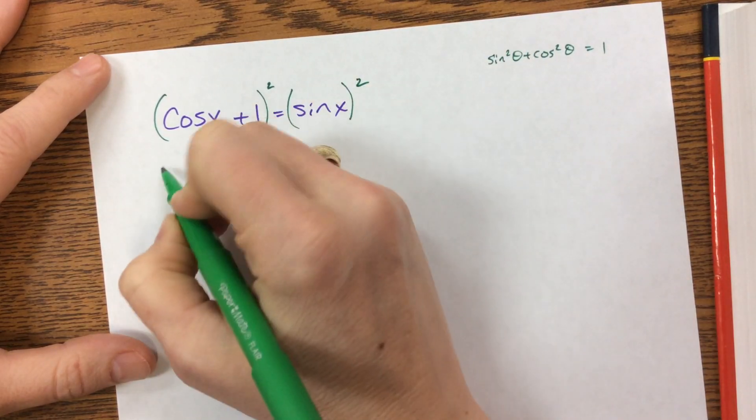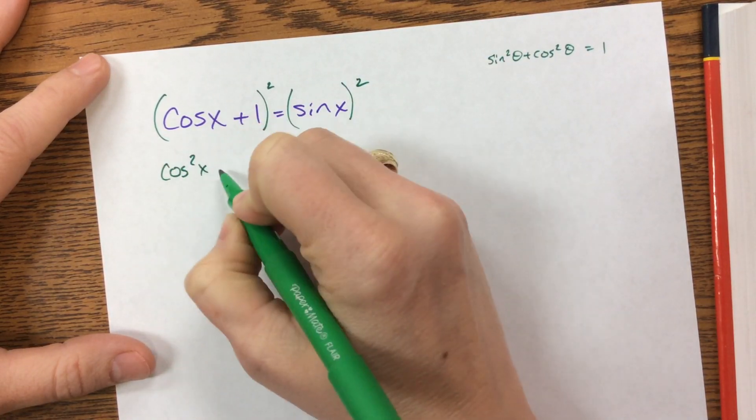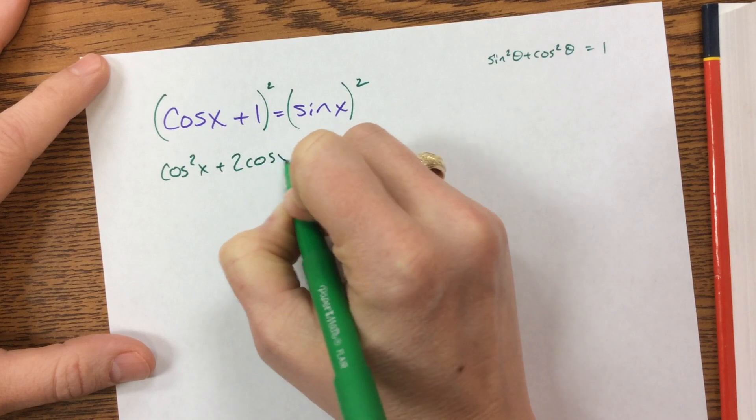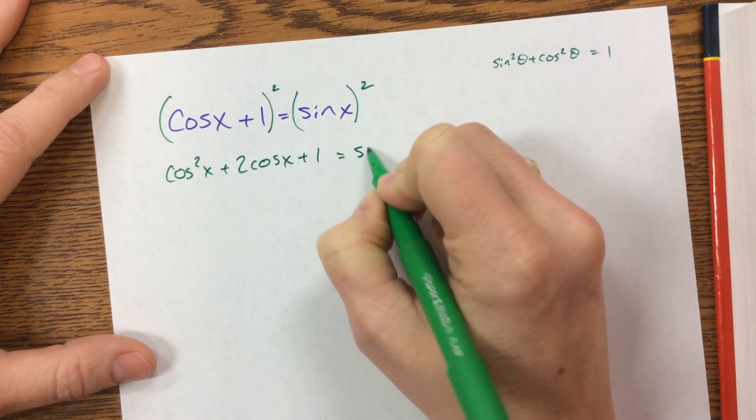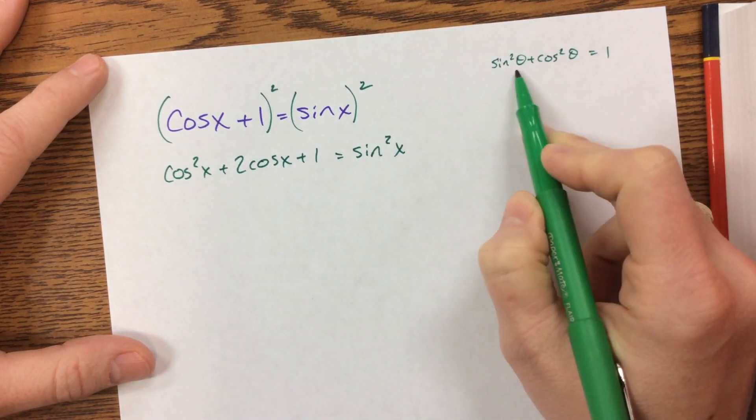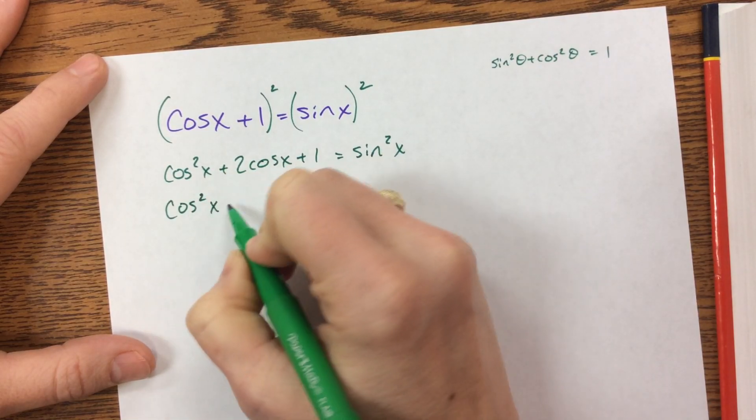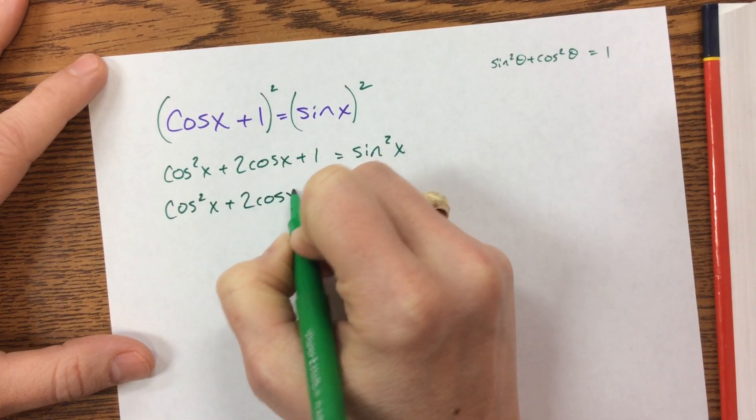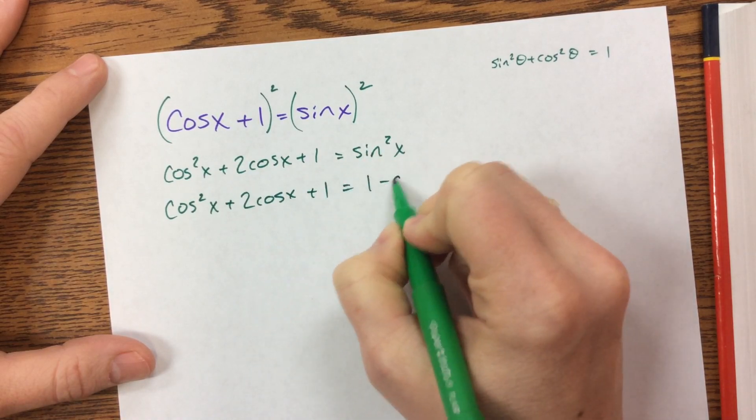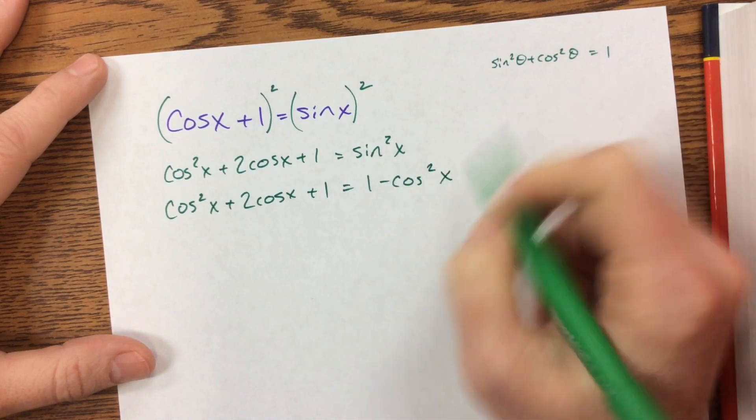So I'm squaring both sides, and I get cosine squared plus 2 cosine plus 1 is equal to sine squared. I'm well aware that sine squared is equal to 1 minus cosine. Not cosine, but cosine squared, what I wrote.